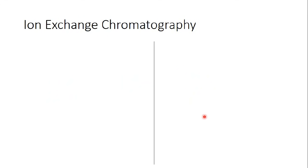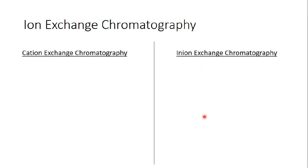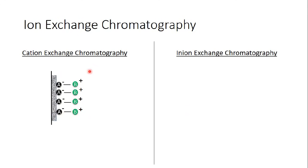In ion exchange chromatography there are two types: cation exchange chromatography and anion exchange chromatography. In cation exchange chromatography, the substance covalently bound to the resin — substance A — is negatively charged, and this substance is bound to substance B, which is positively charged, via an ionic bond.